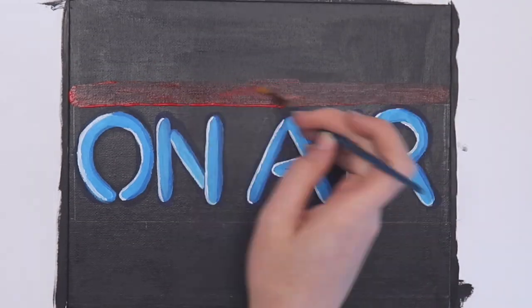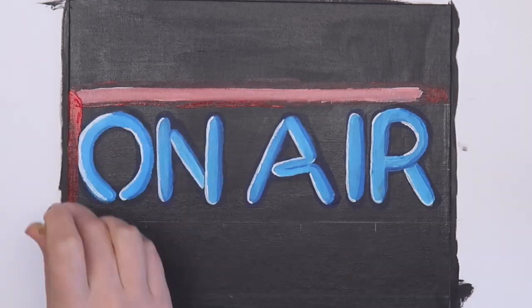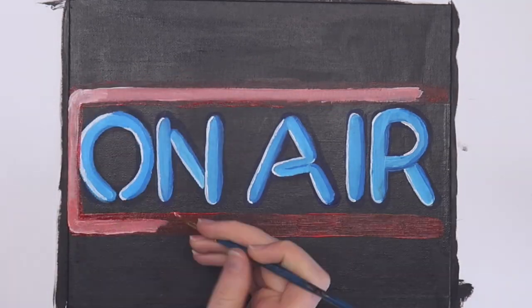Since my sign actually had two colors, I used the same technique to paint the red tubing surrounding the sign. Again, I painted this one section at a time, so the red paint wouldn't dry too fast.